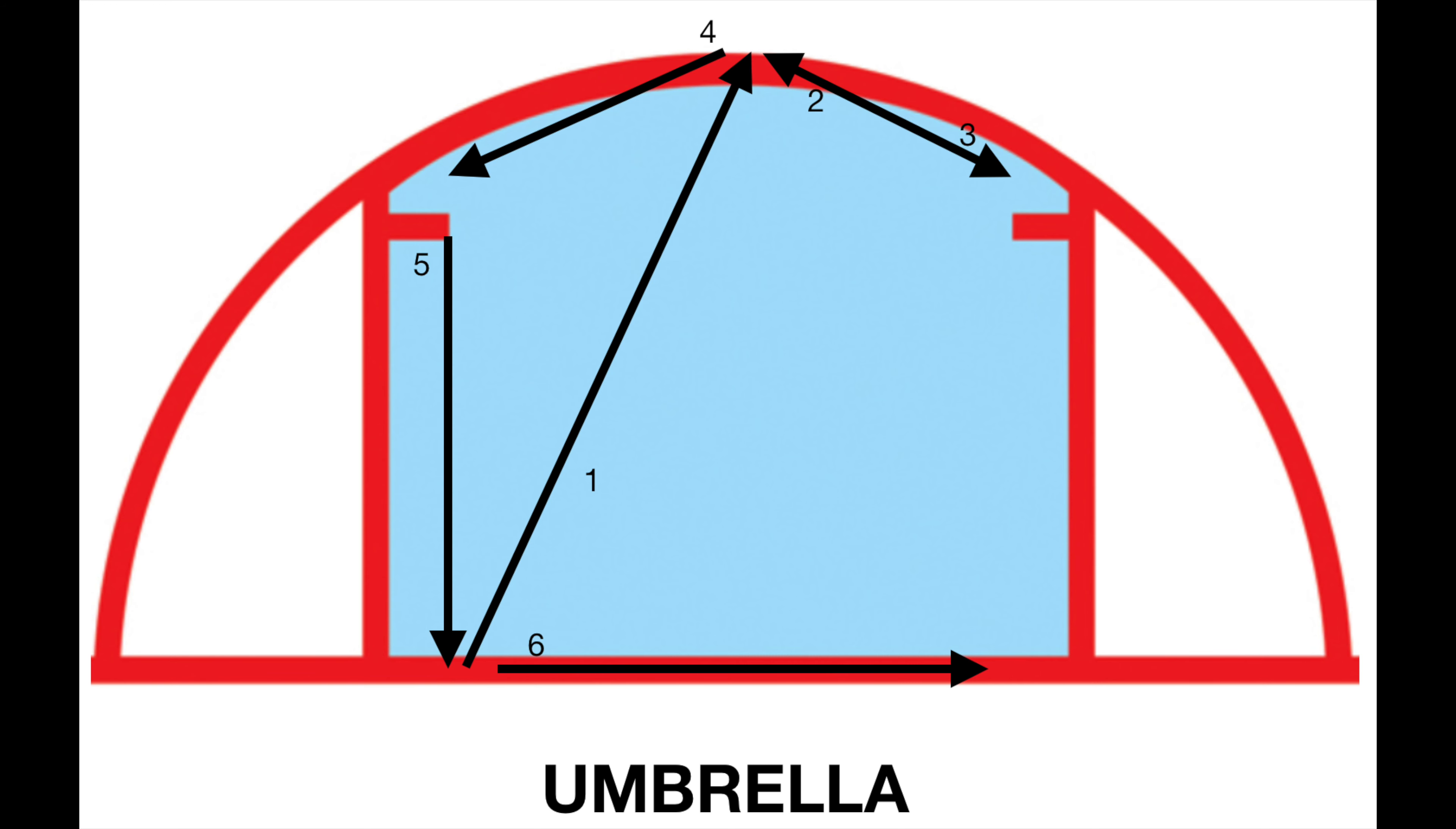After that the goalie will shuffle to the right face off dot, hold, and then back to the top of the crease. Then the goalie will shuffle to the left dot and hold.